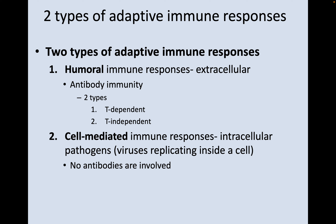There are two major types of adaptive immune responses. The first are humoral immune responses, which are extracellular — they involve antibody immunity, with T-dependent and T-independent humoral immune responses. We also have cell-mediated immune responses, which are for intracellular pathogens like viruses replicating inside a cell. No antibodies are involved because it's happening inside the cell.